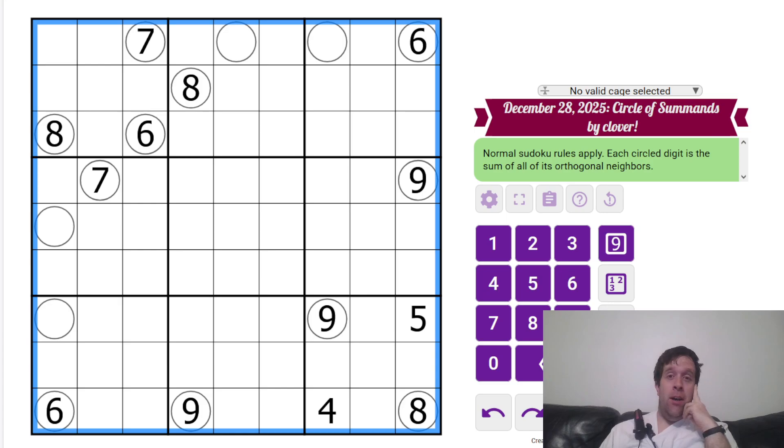But today we're looking at December 28th, 2025's Circle of Symonds by Clover. Clover's one of our Satellite GAS HQ, so my name is Bill Murphy. G'day, how are you doing?